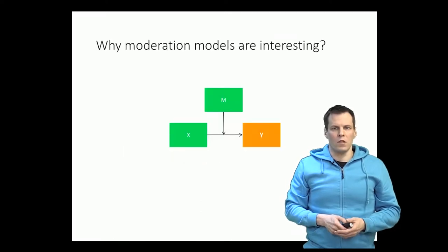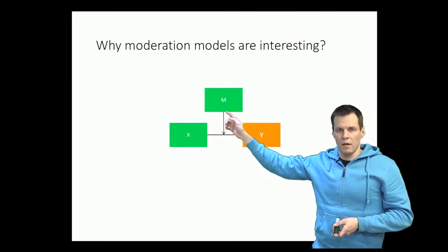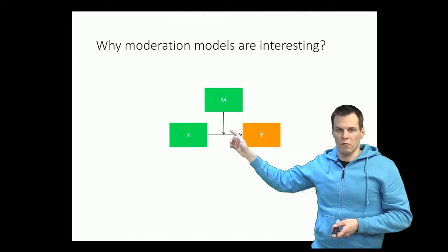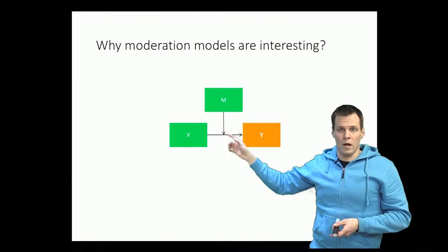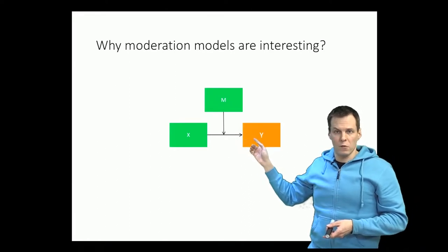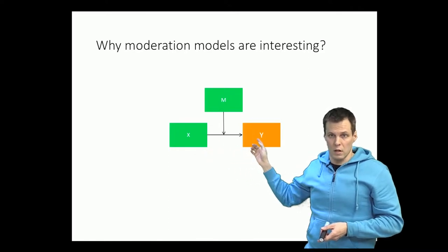So why are these kinds of models interesting? This is the normal way of drawing a moderation model. We have the M here which influences the strength of relationship between X and Y. This kind of model allows us to answer the question: under which conditions does the effect of X on Y work, and under which conditions does it not?